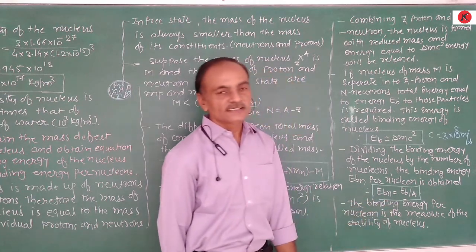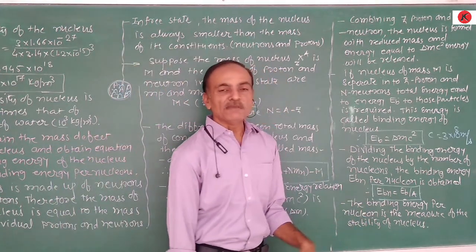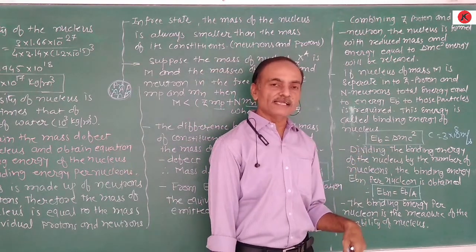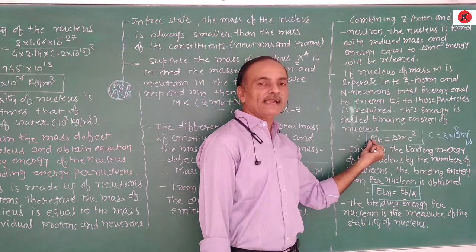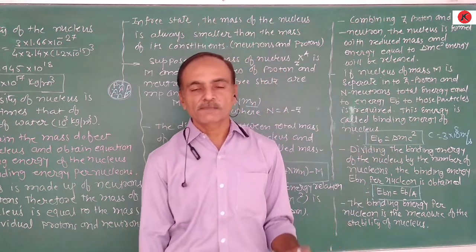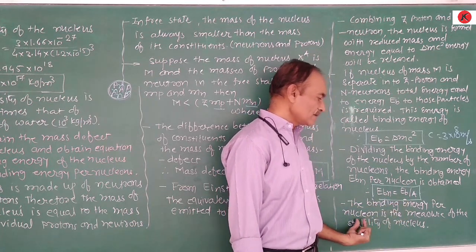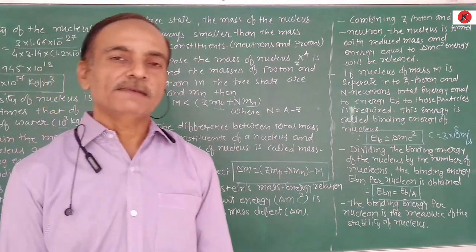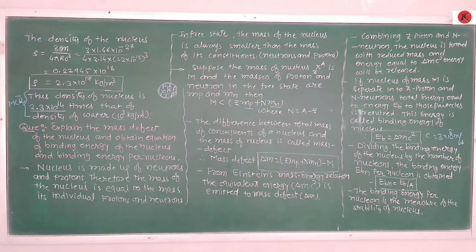The binding energy per nucleon is the measure of the stability of the nucleus. The binding energy Eᵦ = Δm · c² — that is the mass defect multiplied by the square of the velocity of light in vacuum. If this binding energy is divided by the number of nucleons A, we obtain the binding energy per nucleon: Eᵦ/ₙ = Eᵦ / A. Binding energy per nucleon is the measure of the stability of the nucleus.